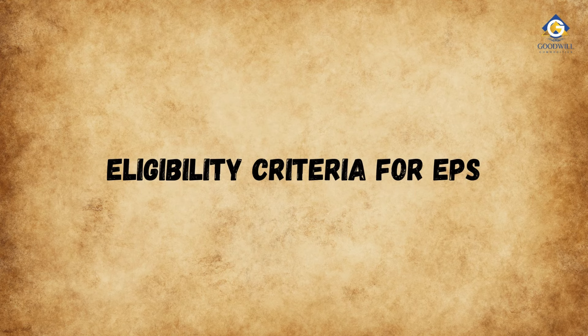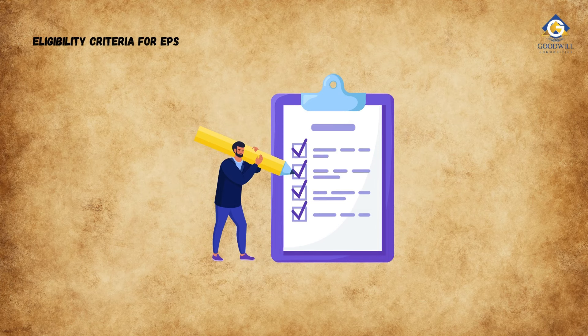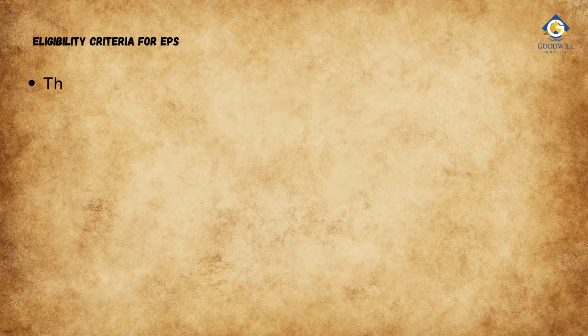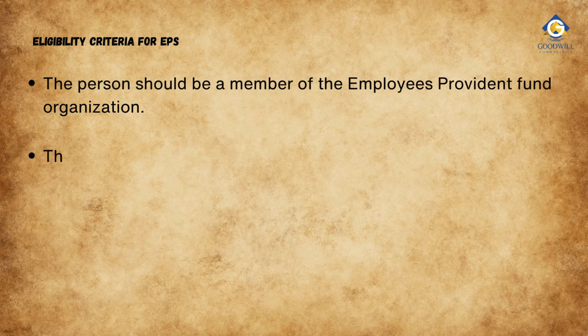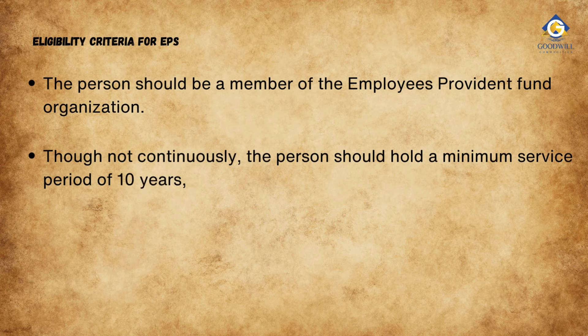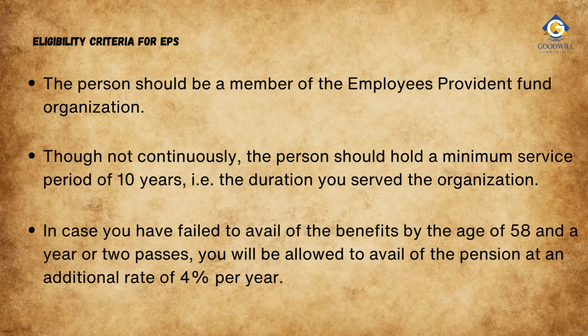Eligibility Criteria for EPS. All of the following criteria have to be fulfilled to avail the benefits of the Employee Pension Scheme. The person should be a member of the Employees Provident Fund Organization. Though not continuously, the person should hold a minimum service period of 10 years — that is, the duration you serve the organization. In case you have failed to avail the benefits by the age of 58 and a year or two passes, you will be allowed to avail the pension at an additional rate of 4% per year.